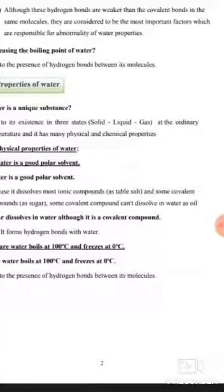The hydrogen bond between water molecules is a weak electrostatic attraction between the hydrogen and oxygen in water molecules. Although the hydrogen bond is weaker than the covalent bond, it is responsible for the abnormality of water properties.